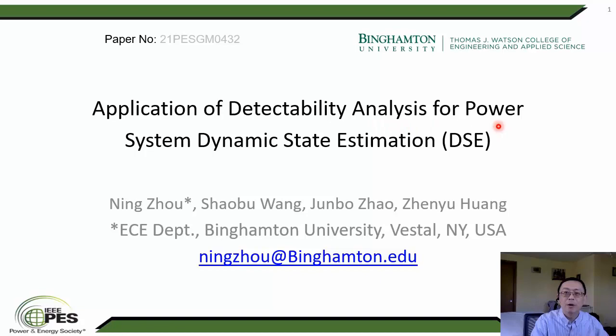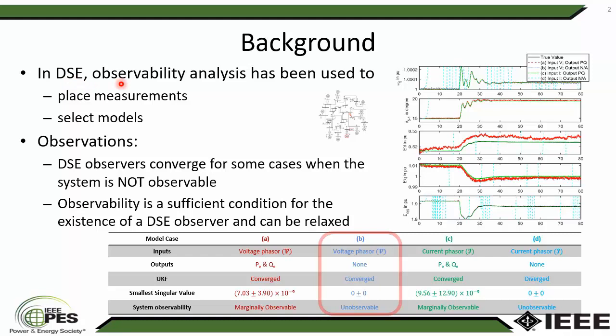In dynamic state estimation, observability analysis has often been used to place measurements and select models so that DSE, dynamic state estimation, can converge to the true values. Following that guideline, we set up a dynamic state estimation using the IEEE 10-machine 39-bus system to estimate the dynamic states of a generator, using the UKF, unscented Kalman filter, for different input and output setups, to test whether observability analysis can guide the placement of measurements.